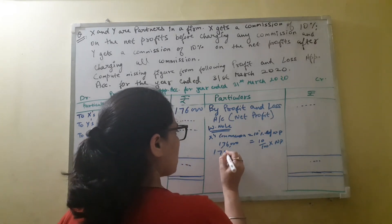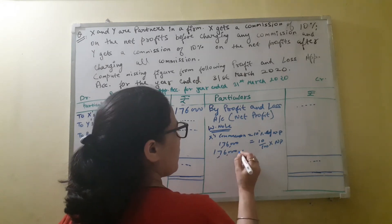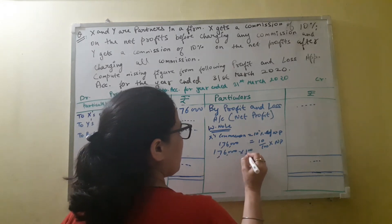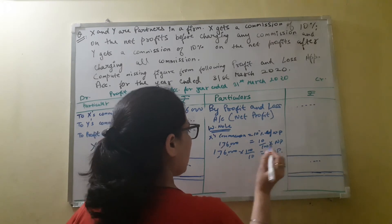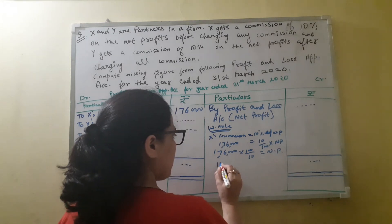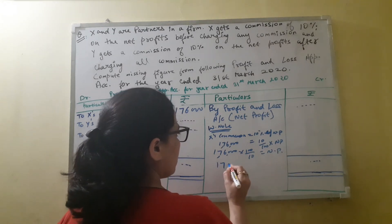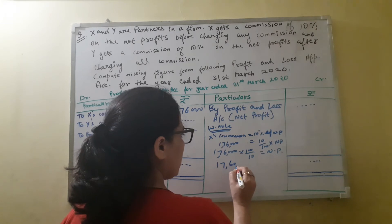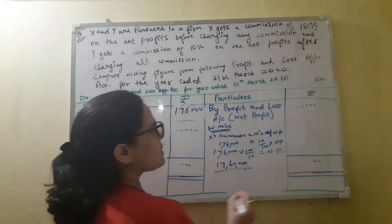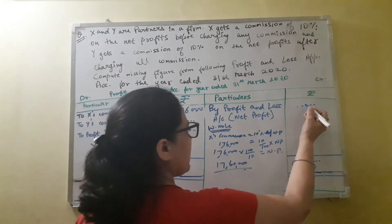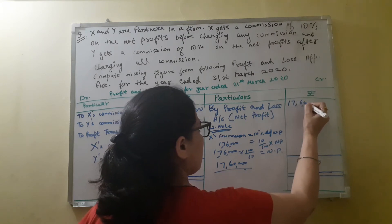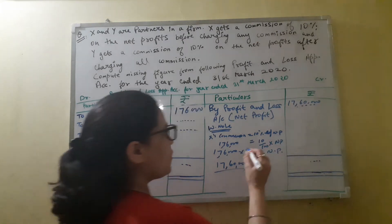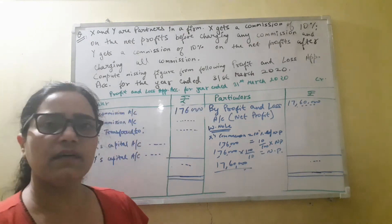Moving this amount across, net profit = 1,76,000 × 100/10 = 17,60,000. So the net profit will be 17,60,000.